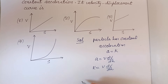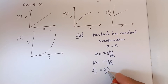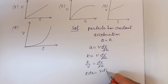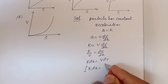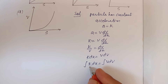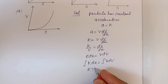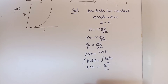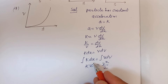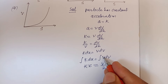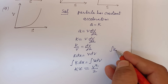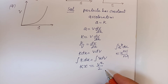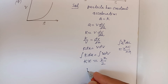Since a is constant k, we have k equal to v dv over dx, so k dx equal to v dv. Integrating both sides: k times integral of dx equals integral of v dv. The integral of dx is x, and by the power rule x to the power n gives x to the power n plus 1 over n plus 1, so the integral of v is v squared over 2.